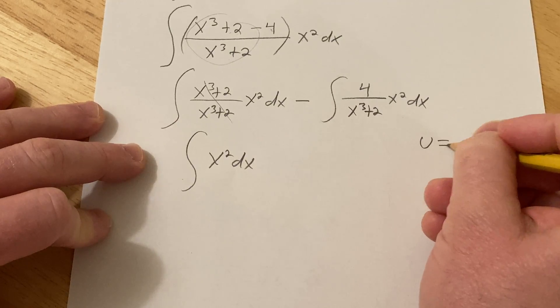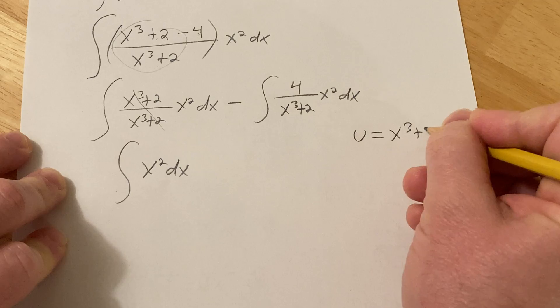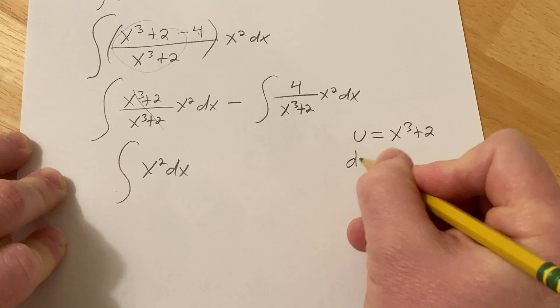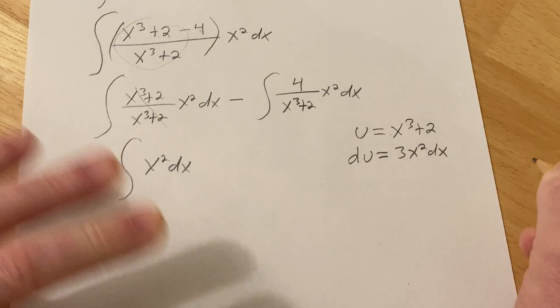Here we can make our substitution. We can let u equal x cubed plus 2. Then computing du that gives us 3x squared dx.